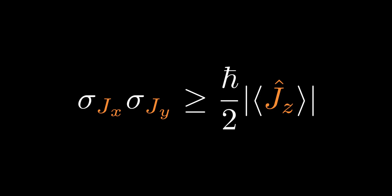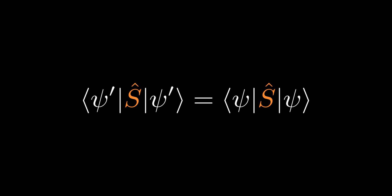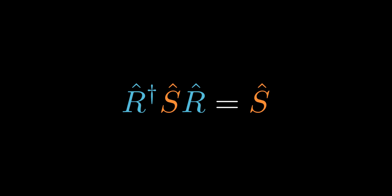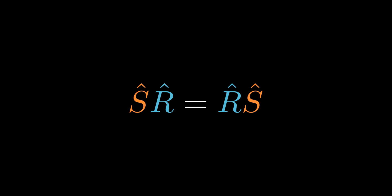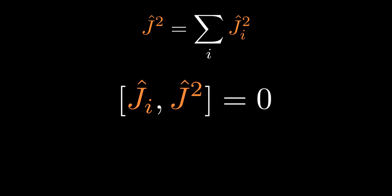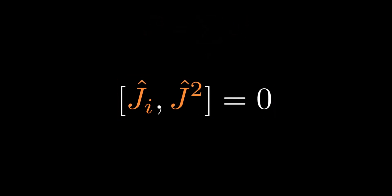To derive the commutation relation between the angular momentum operator and a scalar operator, we observe that the expectation value of a scalar operator S is invariant under rotation. Left-multiplying both sides by R and noting it is unitary yields S R equals R S; hence all scalar operators commute with the rotation operator. Since the rotation operator is a function of the angular momentum operator, we conclude that any component of the angular momentum operator commutes with a scalar operator. The most important scalar operator is the total angular momentum squared, J-squared, which commutes with any component of the angular momentum operator. Hence there exists a complete set of mutual eigenstates of both operators, and it is possible to simultaneously and precisely specify both the total angular momentum and the angular momentum along one chosen axis.